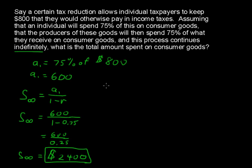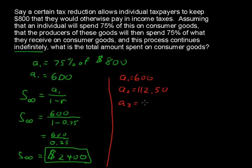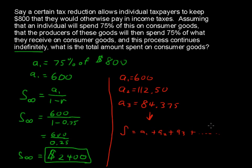Just briefly — that's the quick answer, but if you want to know a little bit more of what's going on here: a sub 1 equals $600. Then a sub 2 would be 75% of that, so a sub 2 would be $112.50. And then another 75% of that — a sub 3 would be approximately $84.375 — and so on, multiplying by 75% every time. And then the sum, of course, is a sub 1 plus a sub 2 plus a sub 3, and so on, indefinitely. That's just the background of what's going on here.